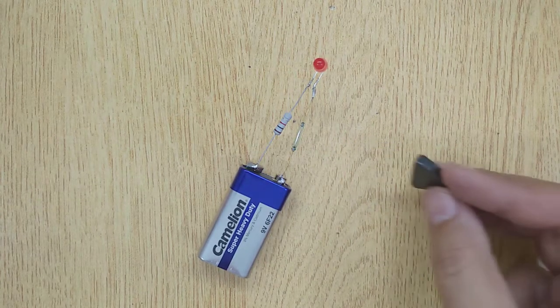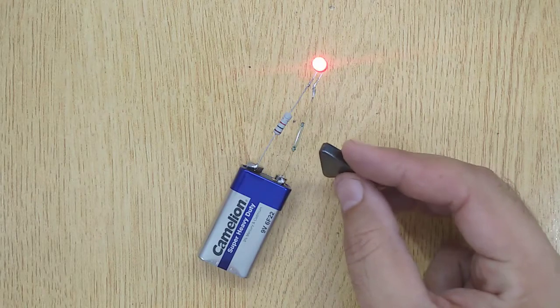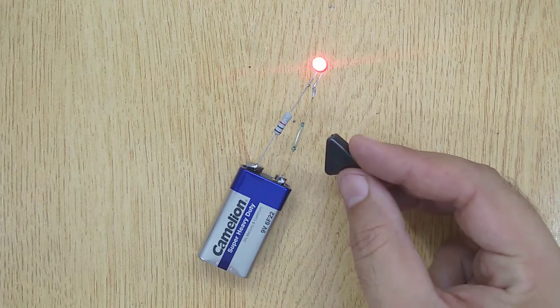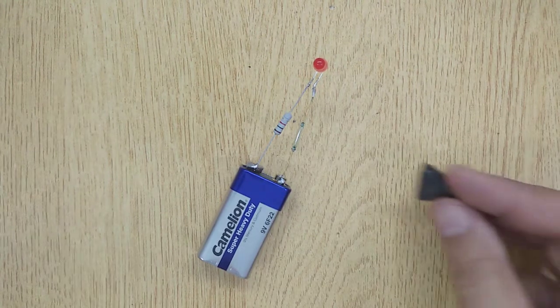When I bring the magnet near the circuit, the LED glows. And when I remove it from the circuit, the LED becomes dark.